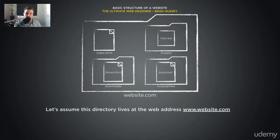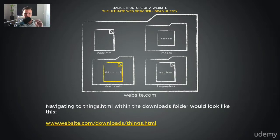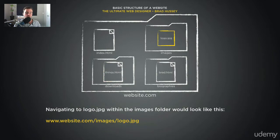Let's assume this directory lives at the web address www.website.com. Navigating to things.html within the downloads folder would look like this in the address bar: website.com/downloads/things.html. Navigating to logo.jpg within the images folder would look like this: website.com/images/logo.jpg.